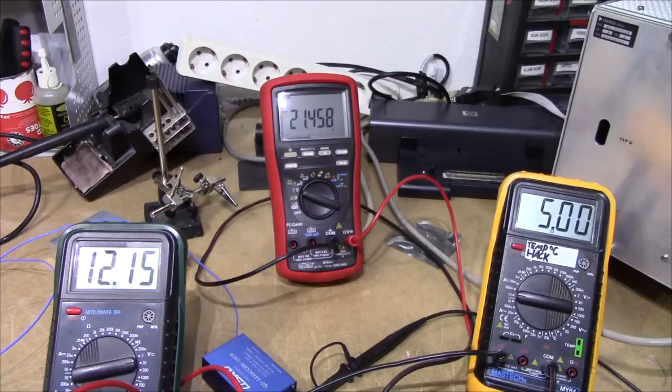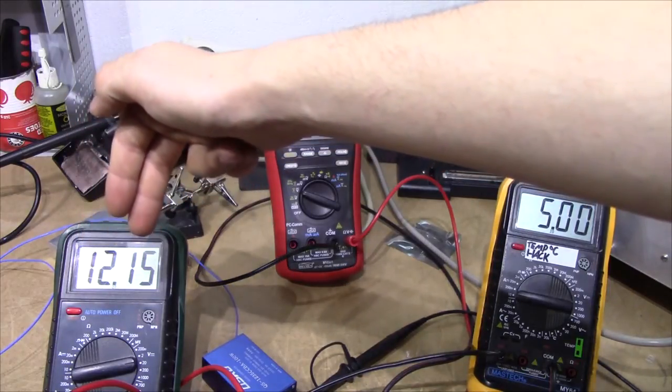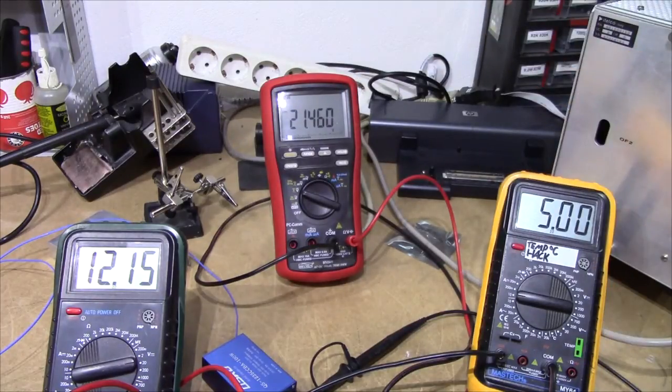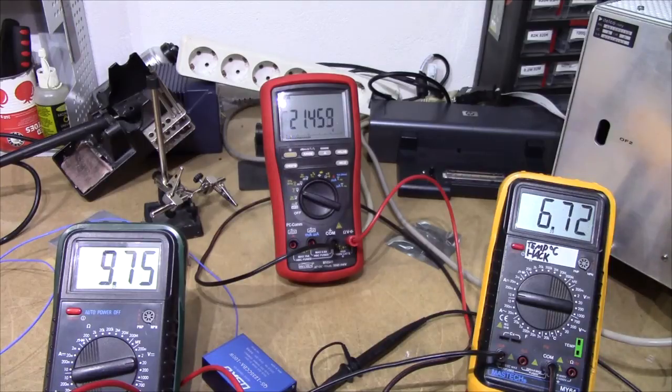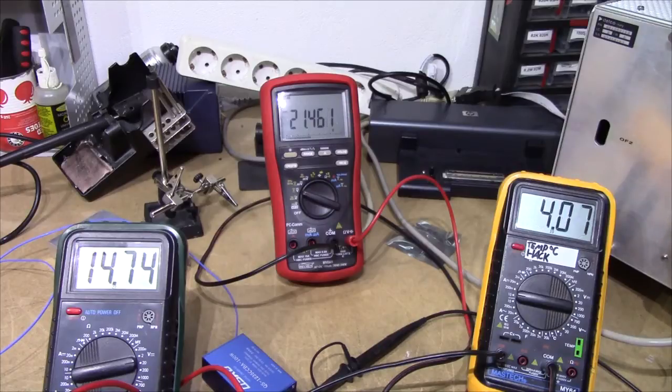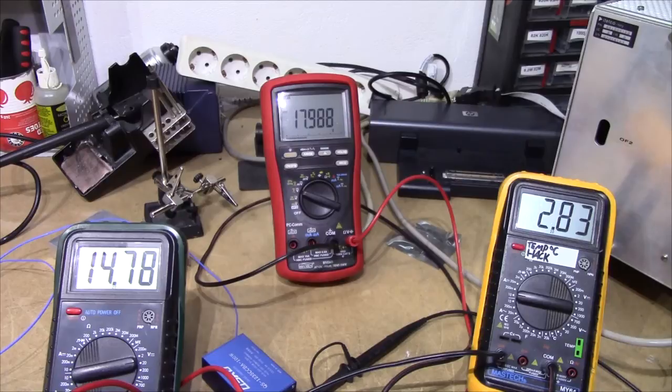And it would be a rather pointless device if it couldn't handle some line voltage variations. So I've got this meter hooked up to measure the input voltage, this one's measuring the output voltage, and this one's still measuring the input current. So I'm just gonna have a play around with that. And it's not having a problem. Very nice.